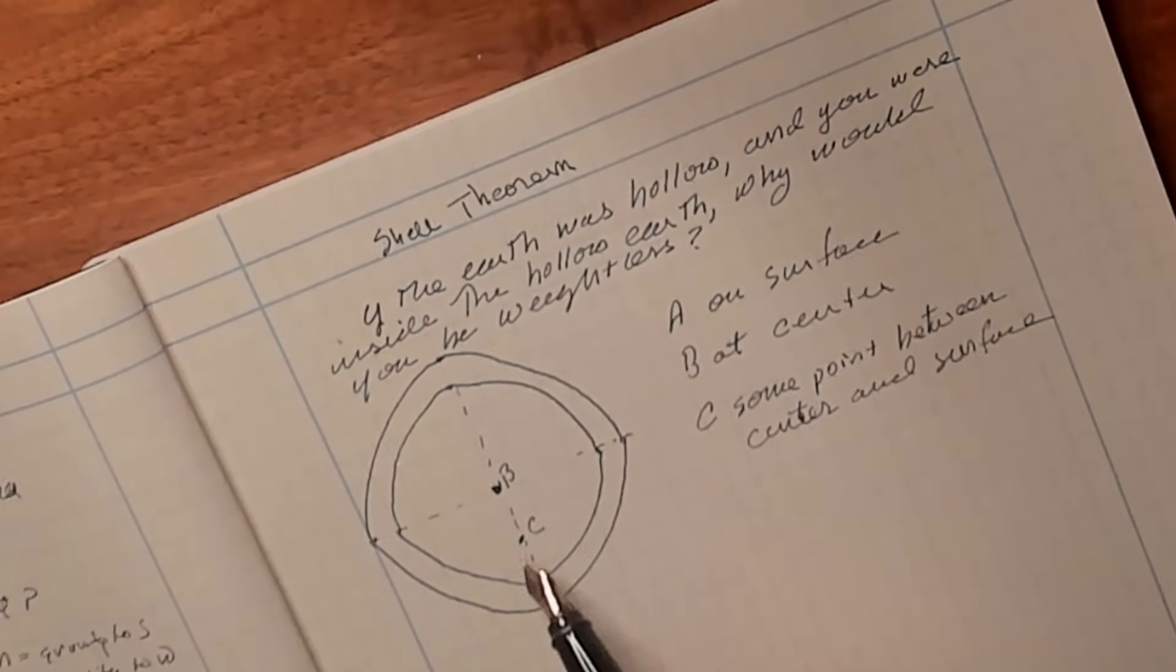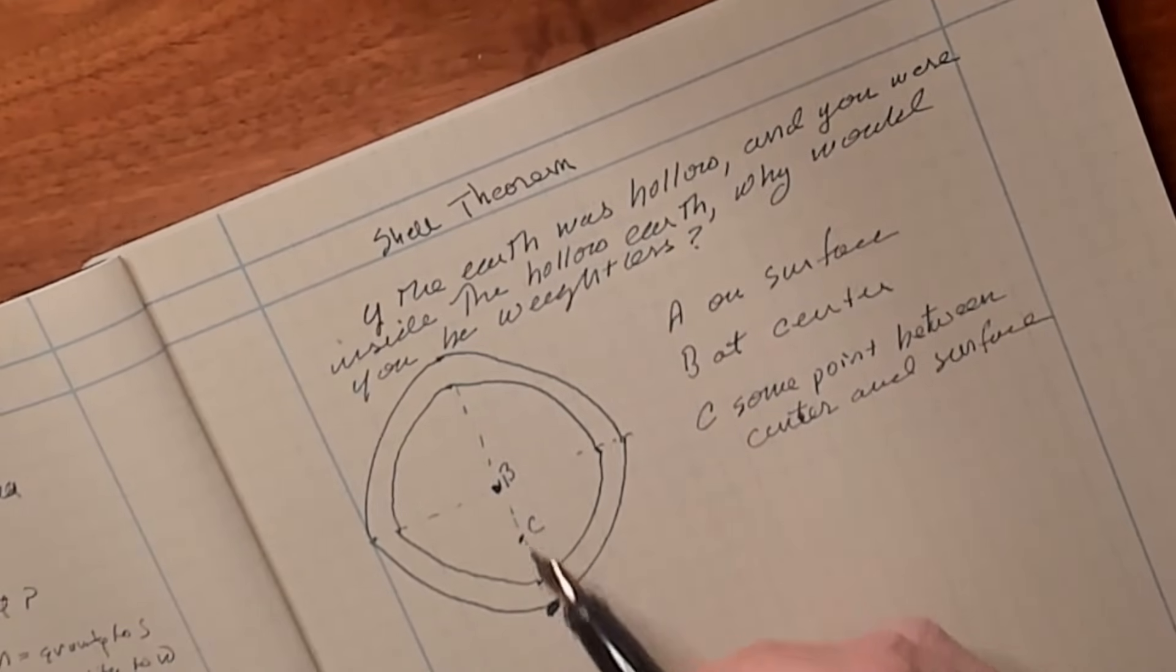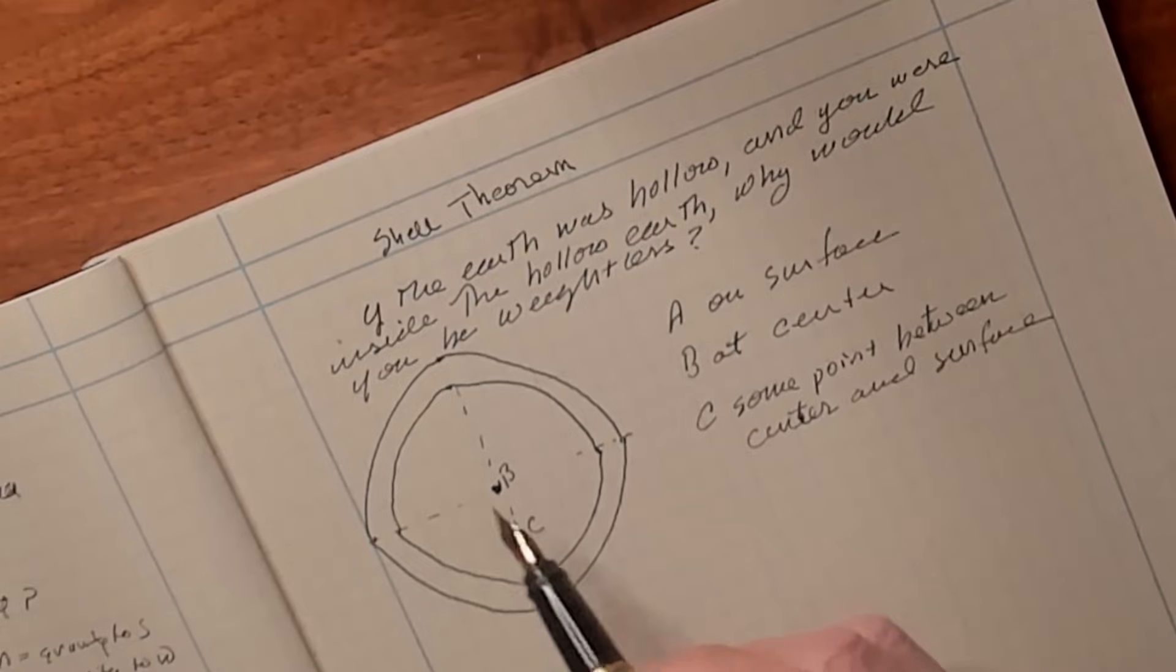But what about point C? And point C could be anywhere from the center of the earth all the way out to the inside of the shell here. How would we calculate what our weight would be here? And would we have any weight?